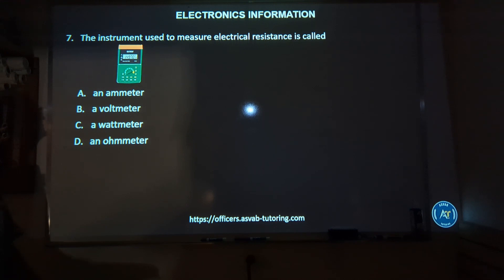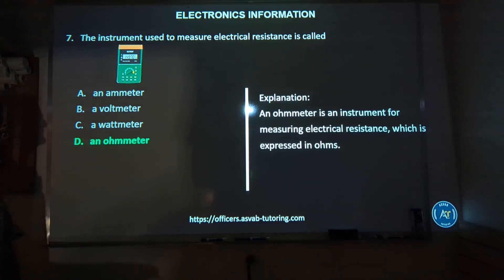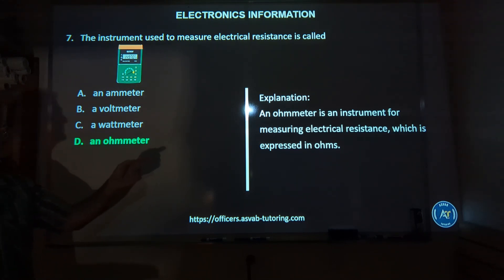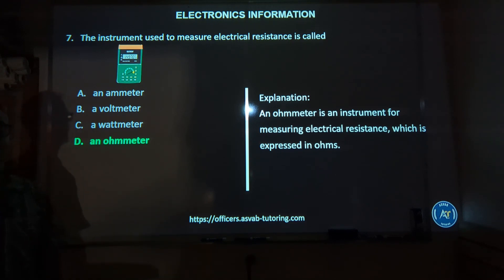Number seven: the instrument used to measure electrical resistance is called — an ammeter, a voltmeter, a wattmeter, or an ohmmeter? The correct answer is D, an ohmmeter. An ohmmeter is an instrument for measuring electrical resistance, which is reflected in ohms.